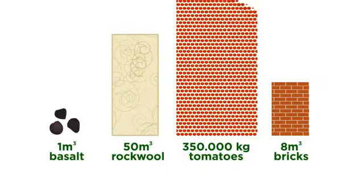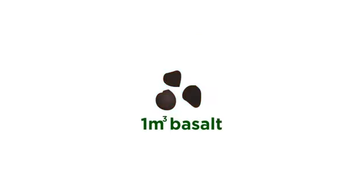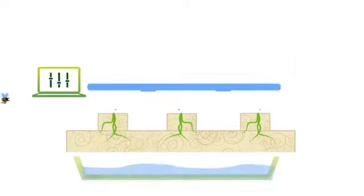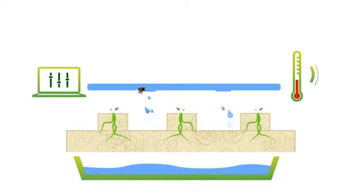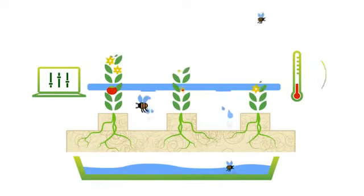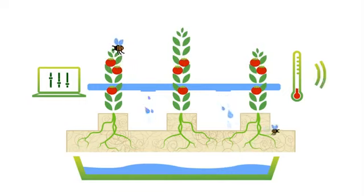And all that, thanks to 1 cubic meter of basalt. All these creative and sustainable solutions have been developed to ensure that plants can grow as well as possible, with the least possible impact on the environment.